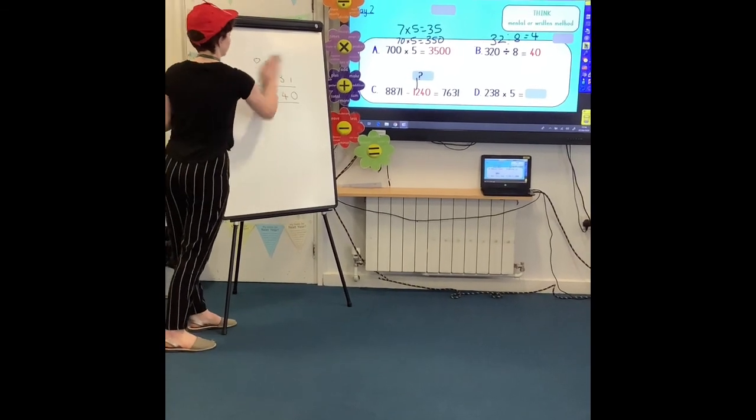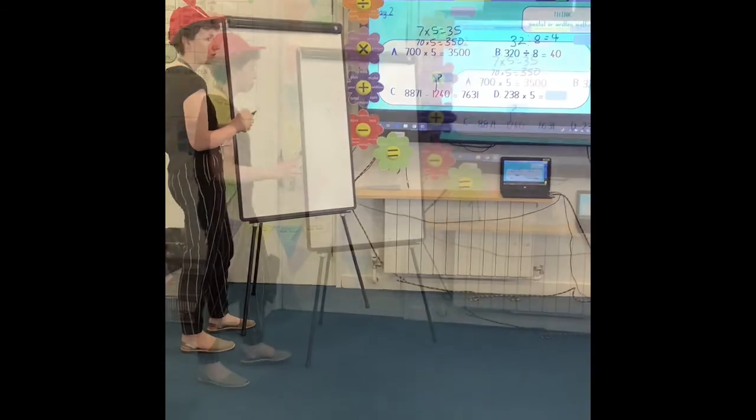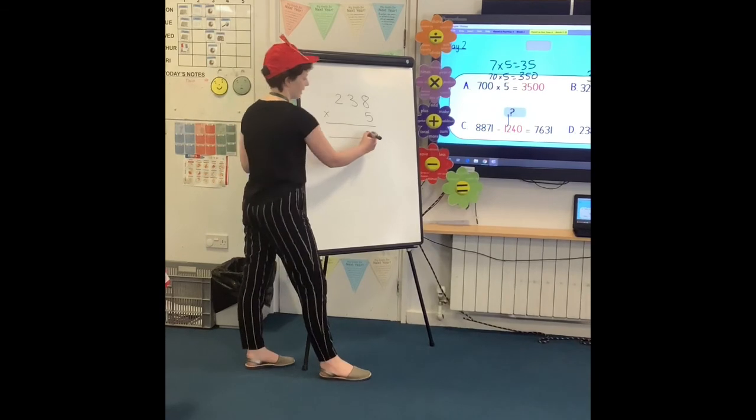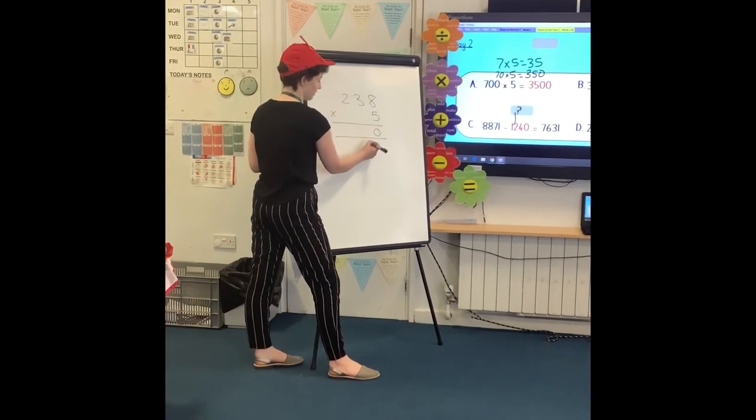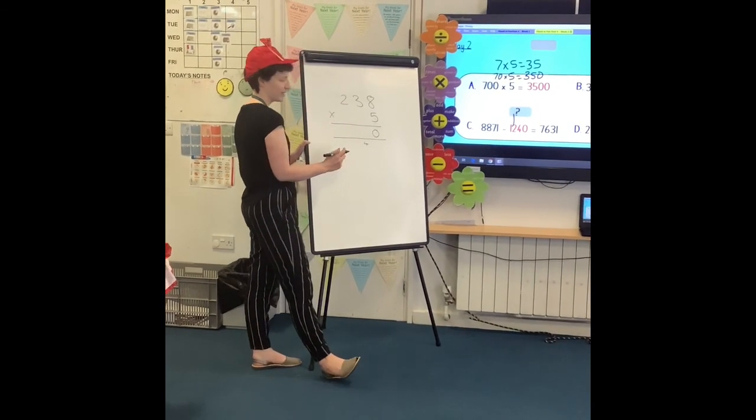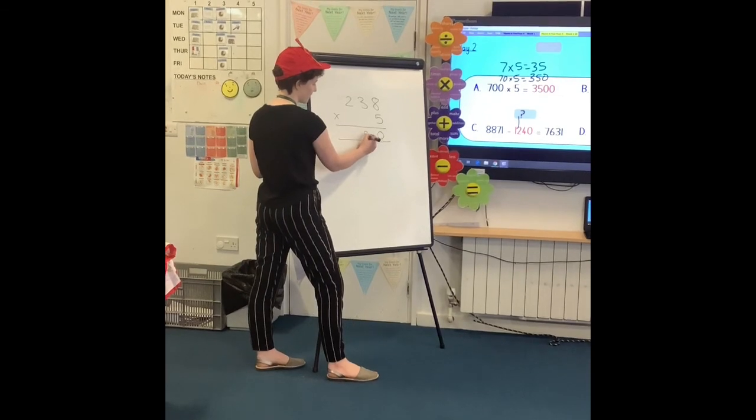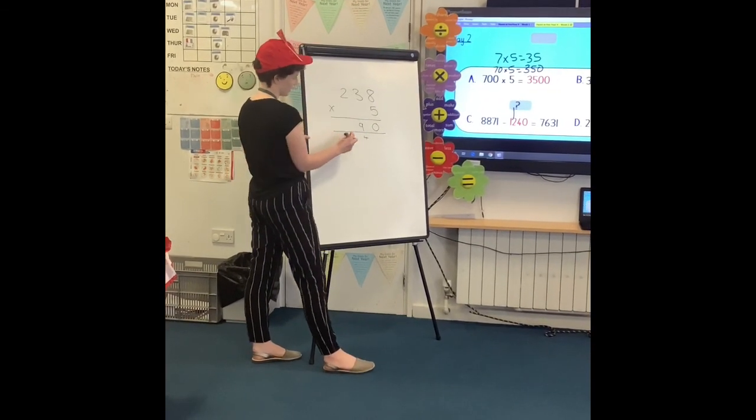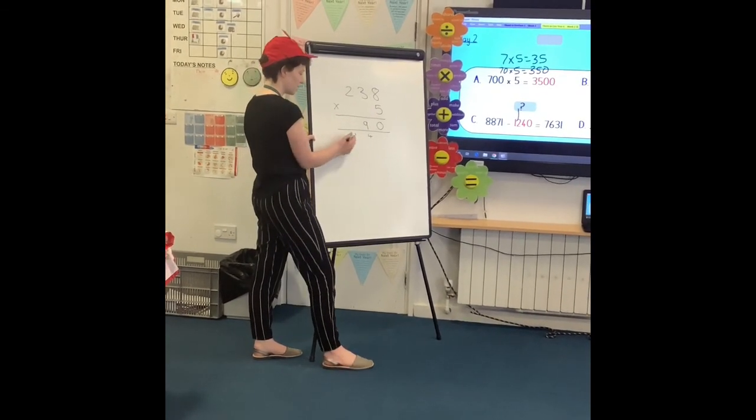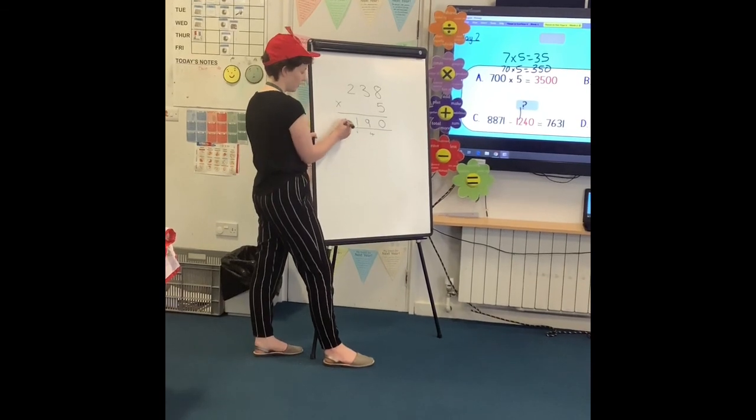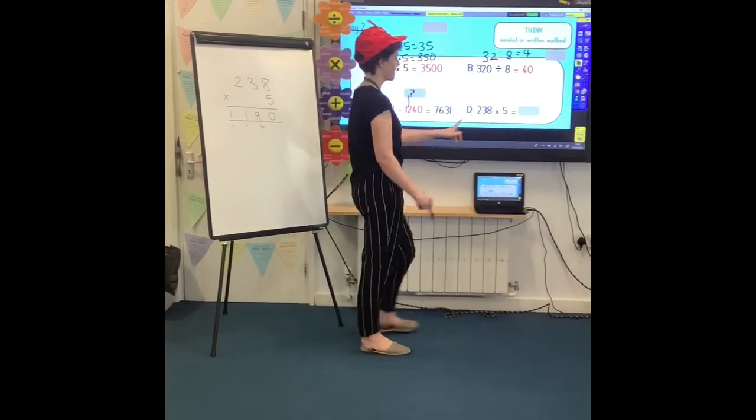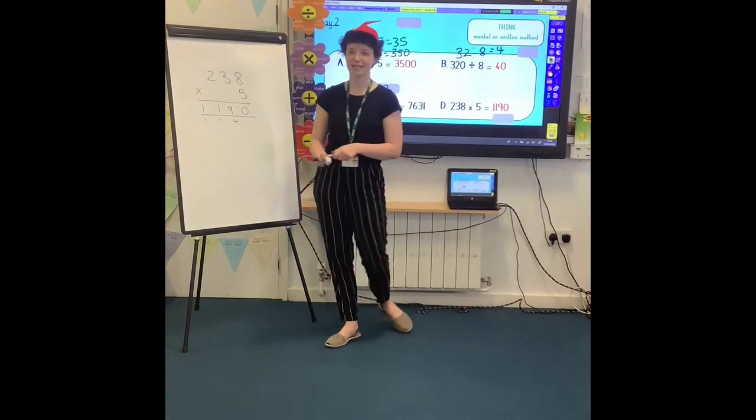And then my final calculation, again, another one I would have done a written method for. I have got 238 times 5. So I have got 8 ones times 5 is 41. So I am going to regroup all of those forty ones for four tens. I have got three tens times 5 is 15 tens, add 4 is 19 tens. So I am regrouping 10 of those for 100 and I have 9 tens left. Then I have got two hundreds times 5 is ten hundreds, add another one is eleven hundreds. So I regroup 10 of those for 1,000 and I have got my 100 remaining. So the product of 238 and 5 is 1,190.